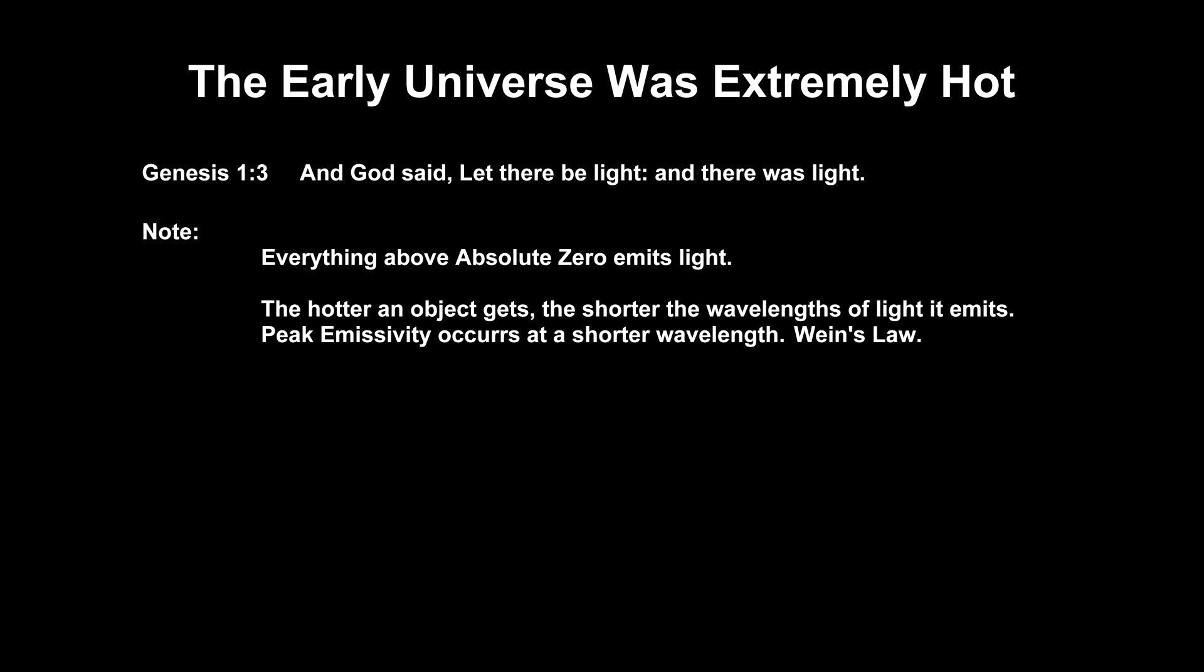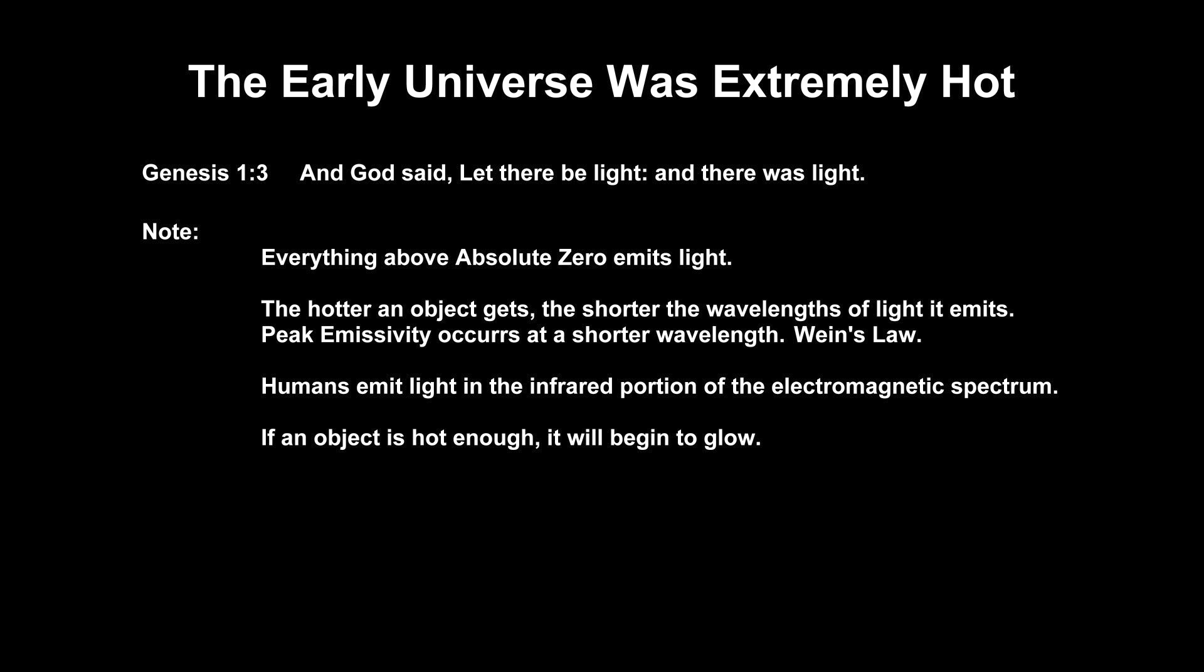This is evident by the fact that the hotter an object gets, the shorter the wavelength of light it emits. We humans emit light in the infrared portion of the electromagnetic spectrum. As objects get hotter, they begin to emit light in the visible portion of the electromagnetic spectrum. Case in point, the glowing burners on the stove.